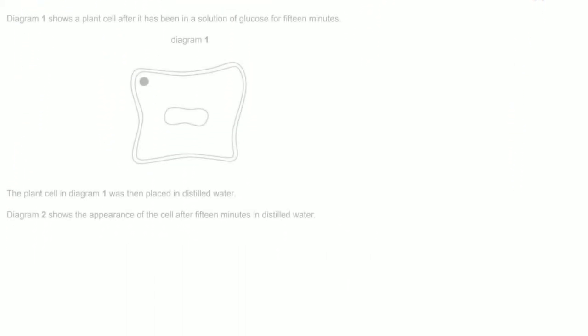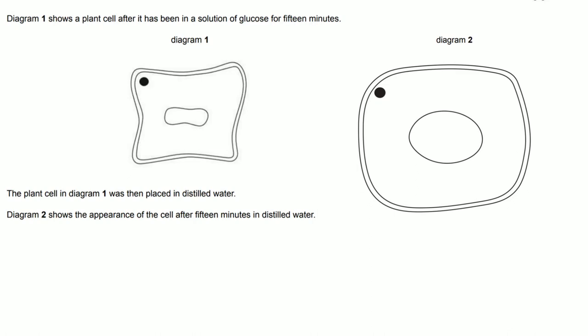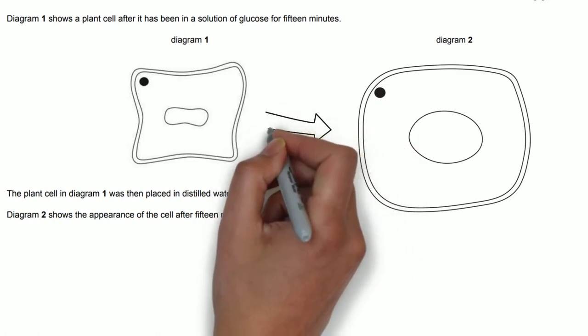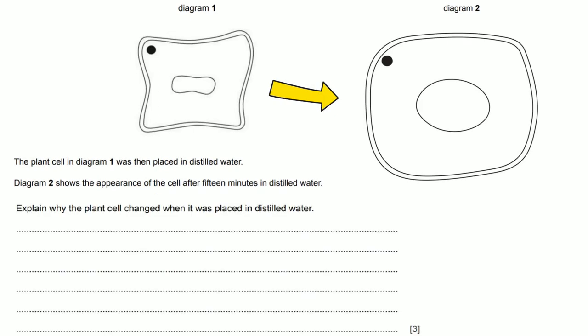The second question shows two cells. Diagram one shows a cell that has been placed in a solution of glucose for 15 minutes. Diagram two shows an appearance of the cell after 15 minutes in distilled water. The question says explain why the plant cell changed when it was placed in distilled water. You're expected to recognize that the diagram two cell has enlarged and the size has got bigger. Now we need to explain how that has happened.